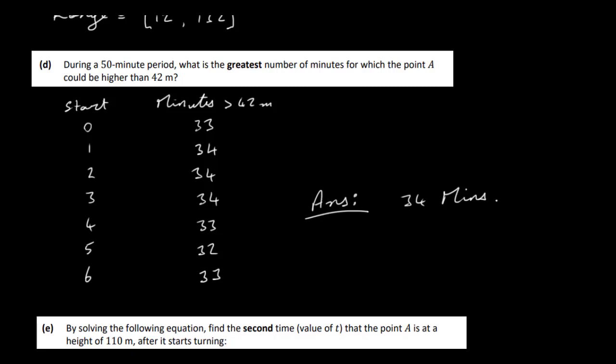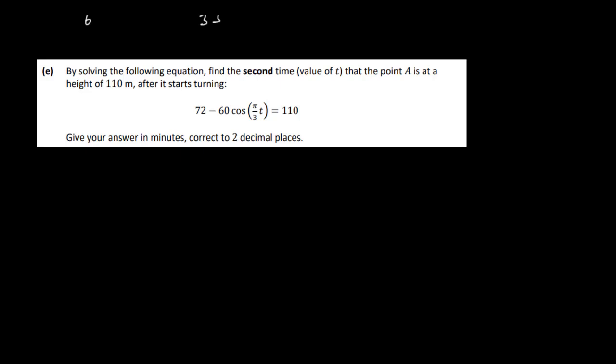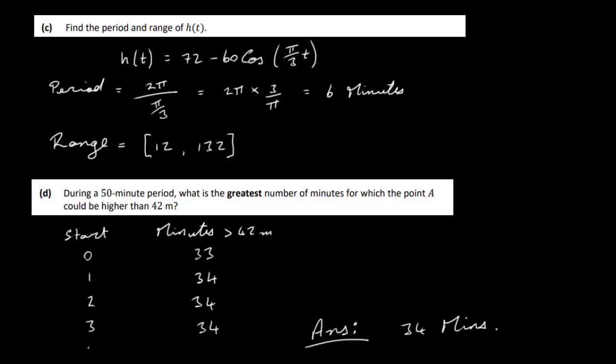There's probably an algebraic method too, but using the graph works fine. Now for part E: by solving the equation, find the second time t that point A is at a height of 110 meters after it starts turning. Give your answer in minutes correct to two decimal places.